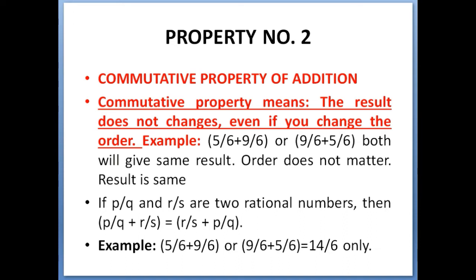Example: 5/6 + 9/6 will give you 14/6. Now if you change the order and write 9/6 first and 5/6 after, you will still get 14/6 as the answer. This is your commutative property of addition. Even if the order changes, the result remains the same.